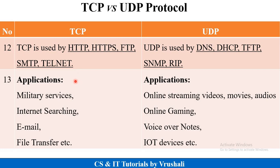One of the most important points is the applications. TCP is mainly used where connection-oriented services are required, such as military services, internet searching, email, and file transfer. UDP is used in online streaming videos, movies, audio, live streaming sessions, online gaming, voice over networks, and IoT devices.